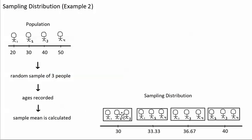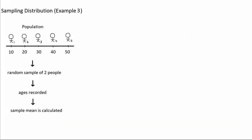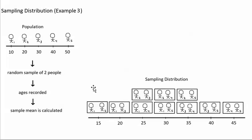Each possible sample provides different information about the population. Here is one more example of a sampling distribution. In this situation, a person is randomly selecting a sample of 2 people from a population of 5 and calculating the mean age of the sample. The person is going to get one of these 10 possible samples, and one of them will become the actual sample. The number that the sample mean comes out to depends on which sample is selected. When a person takes a random sample, it's kind of like the person is spinning a wheel and just waits to see what he or she gets.